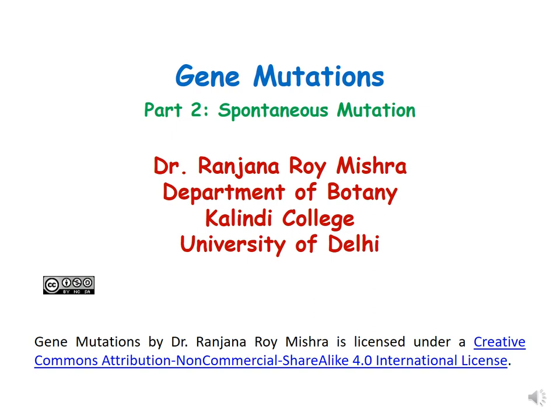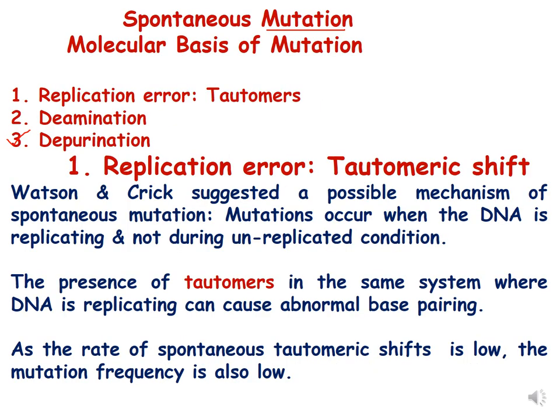This is the second lecture of the lecture series on gene mutations, and we will be discussing spontaneous mutations. Spontaneous mutations are naturally occurring mutations. In the first part of this lecture series we discussed three molecular mechanisms for spontaneous mutation: first is replication error, which happens because of tautomers; second is deamination; and third is depurination.